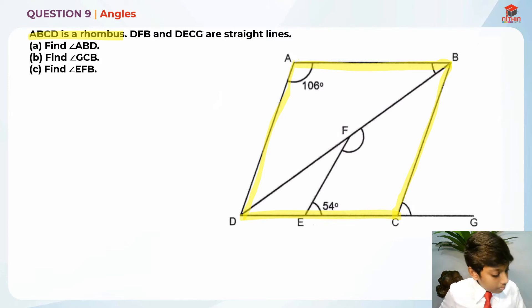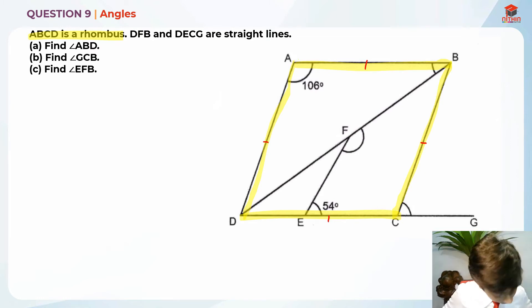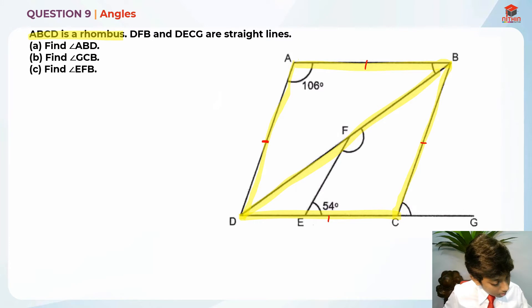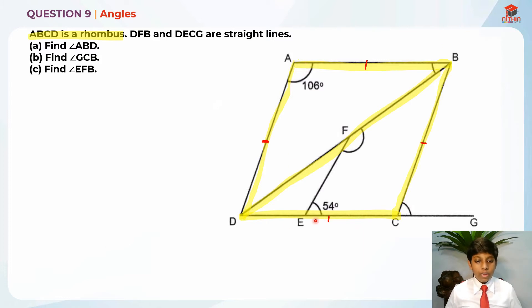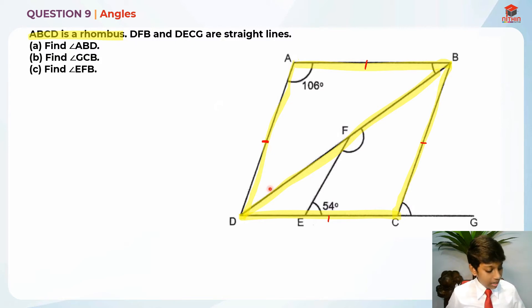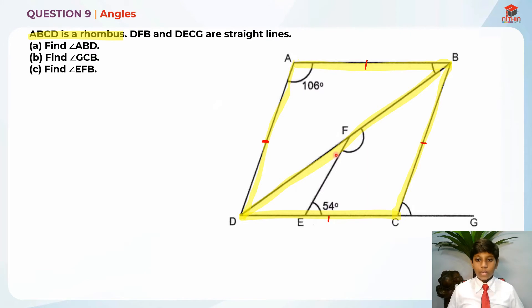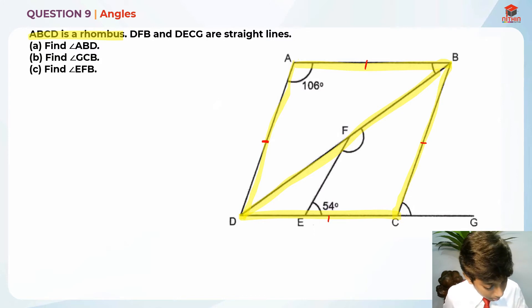So this is a rhombus — all the sides are equal. And this rhombus is actually cut in half, so it actually forms two isosceles triangles. ABD is one isosceles triangle and BCD is another isosceles triangle. DFB is a straight line, that is why these are two identical isosceles triangles. And DECG is also a straight line. So these two are key pieces of information as well.